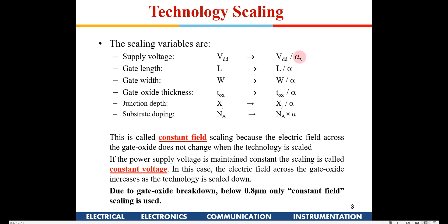In constant field scaling, VDD is scaled by 1/alpha (so multiplied by 0.7), gate length is reduced by 0.7, width is also reduced by 0.7, and gate oxide thickness is also reduced. Junction depth also needs to be reduced, which is achieved by increasing the doping. If you increase the substrate doping, the junction depth is automatically reduced, so the substrate doping NA is increased by a factor of alpha.